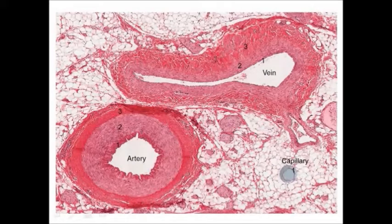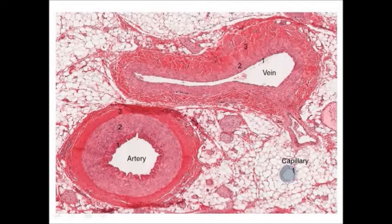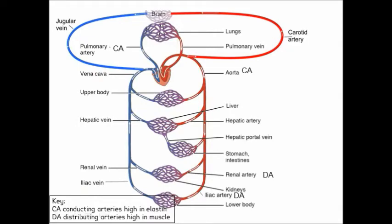Returning to arteries: closer to the heart, an artery must deal with changes in pressure; further away, arteries are more concerned with diverting blood to where it's needed. On the diagram, the aorta and pulmonary artery are labelled CA — conducting arteries — concerned purely with absorbing large pressure changes and conducting blood from the heart. They have a high percentage of elastin and less muscle.